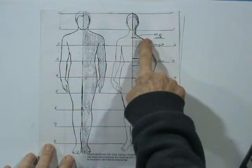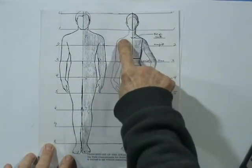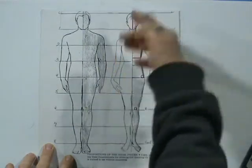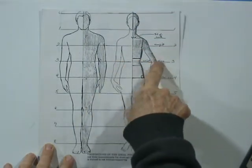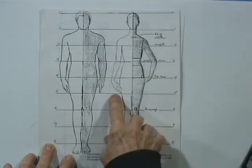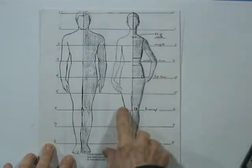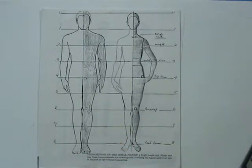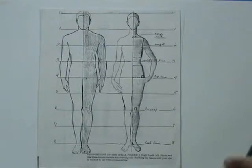At two heads we have the armpit, and we always count down. Three is the waist and the elbows. Four is the wrist and the hips. Then five is the thighs. Six is the kneecaps, seven is the calves, and eight is the bottom of the feet. So I'm giving them the idea that we can actually divide up the figure so we actually get it where it looks real.